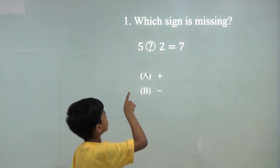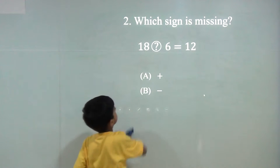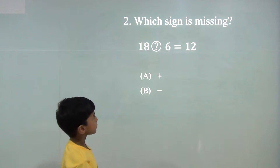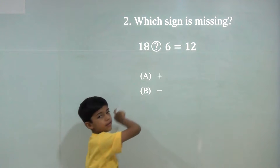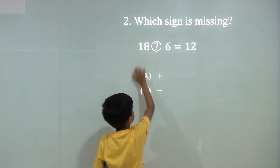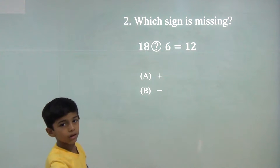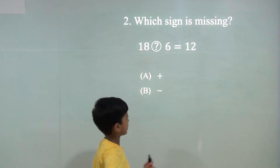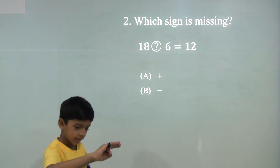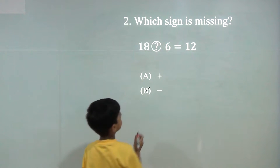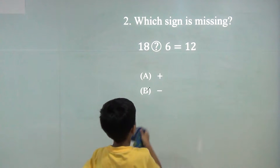5 plus 2 is equal to 7. Now there is a smaller number than what number is here, so we are subtracting — the number is going down. 18 minus 6 is 12.